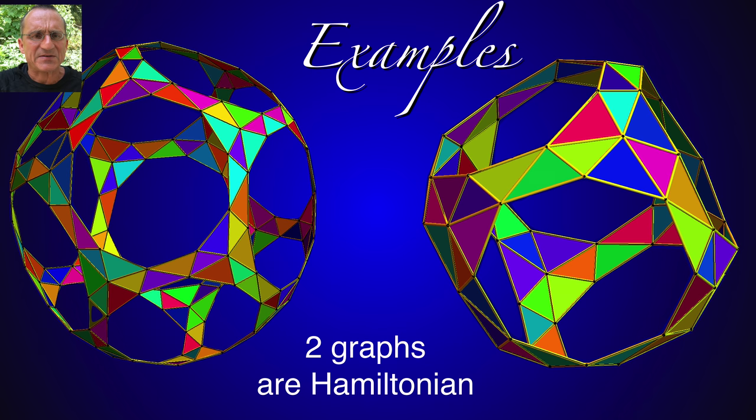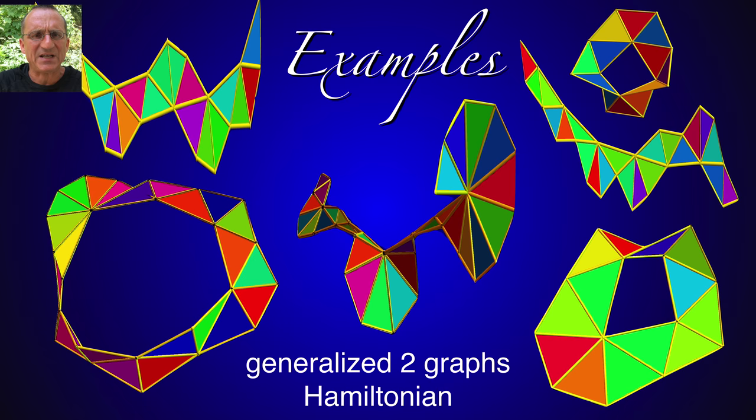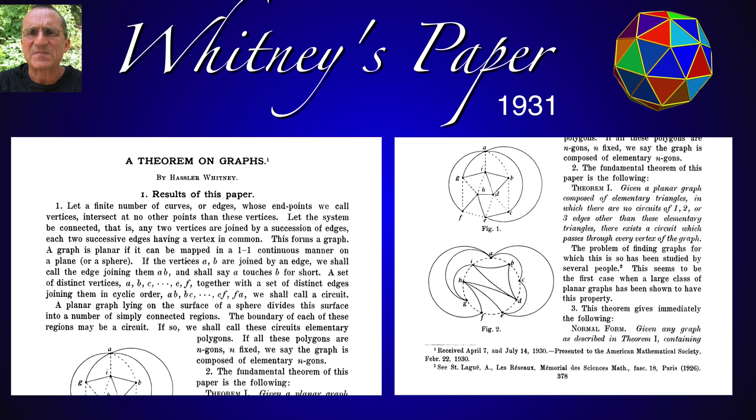Here it works by chance. The two graphs which are Hamiltonian, the theorem covers them, more examples of such graphs.